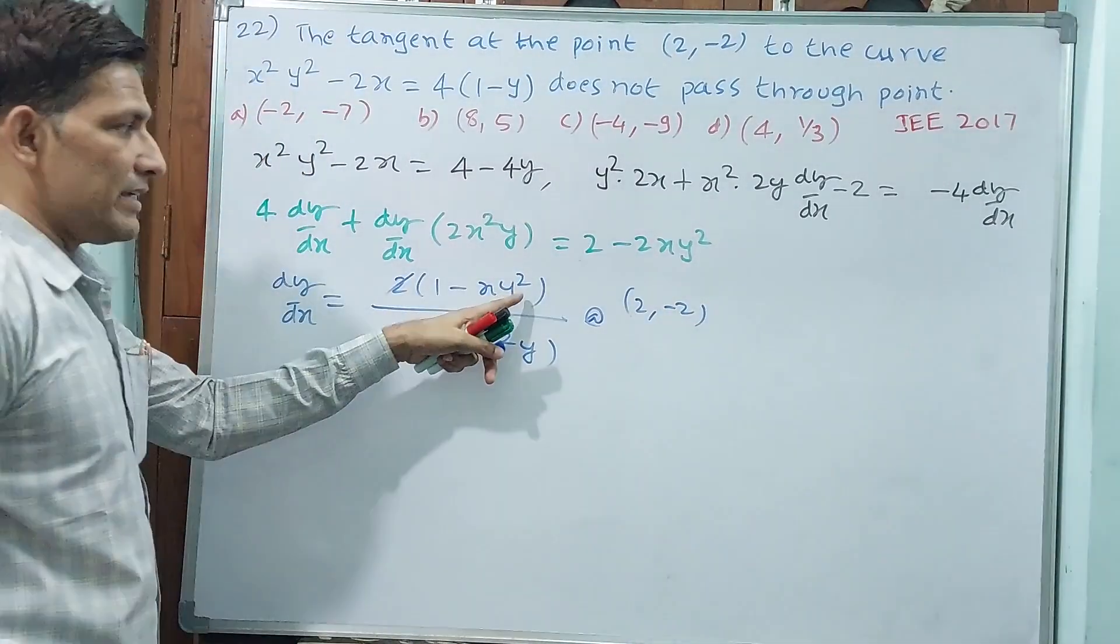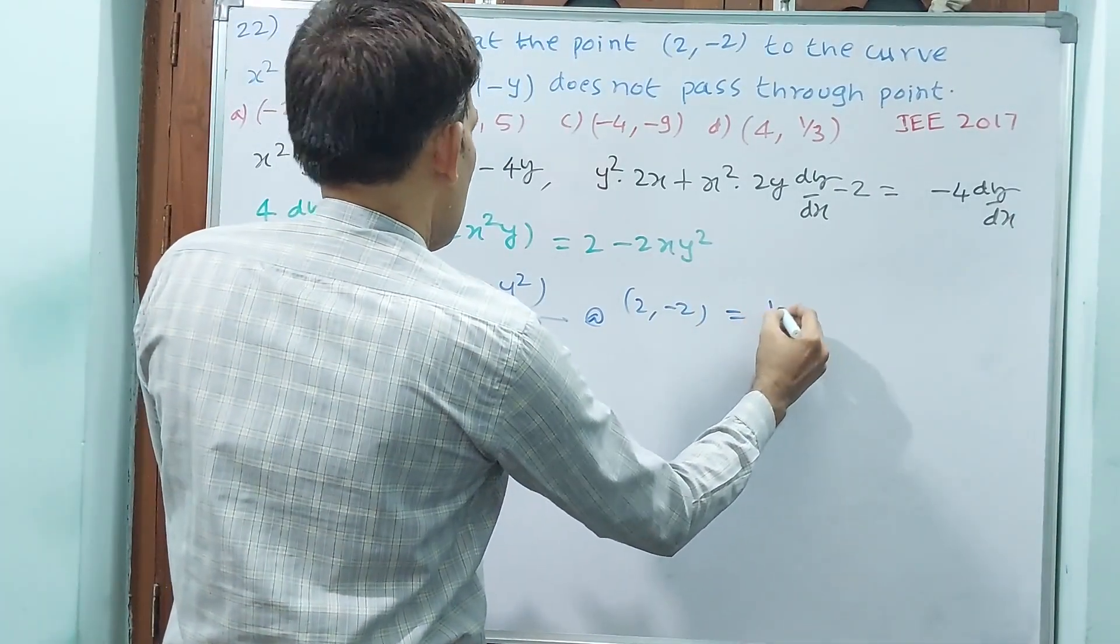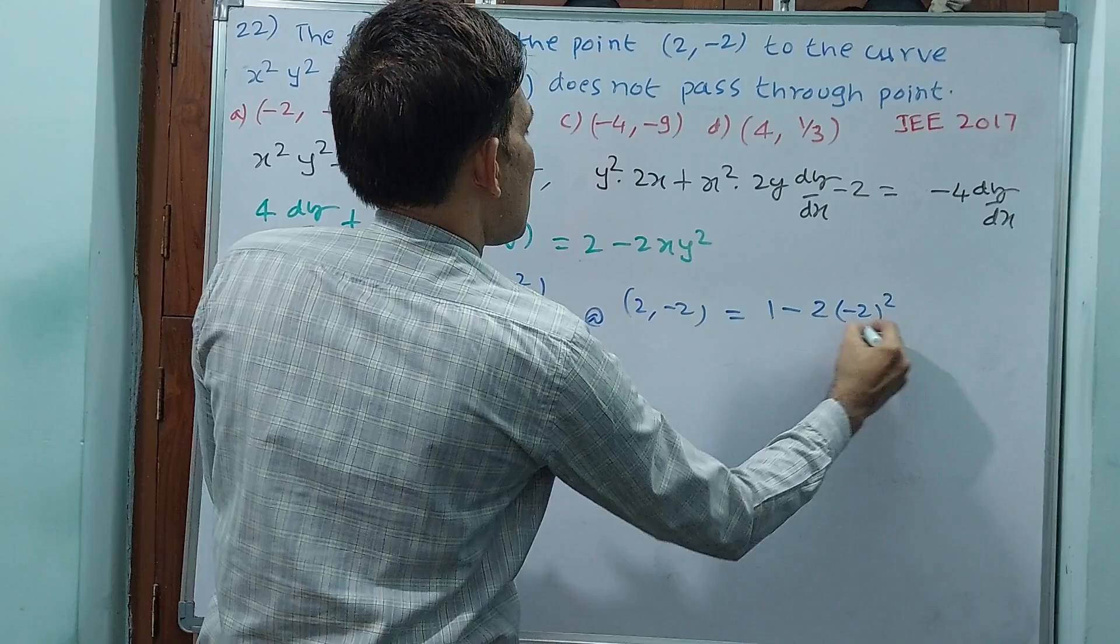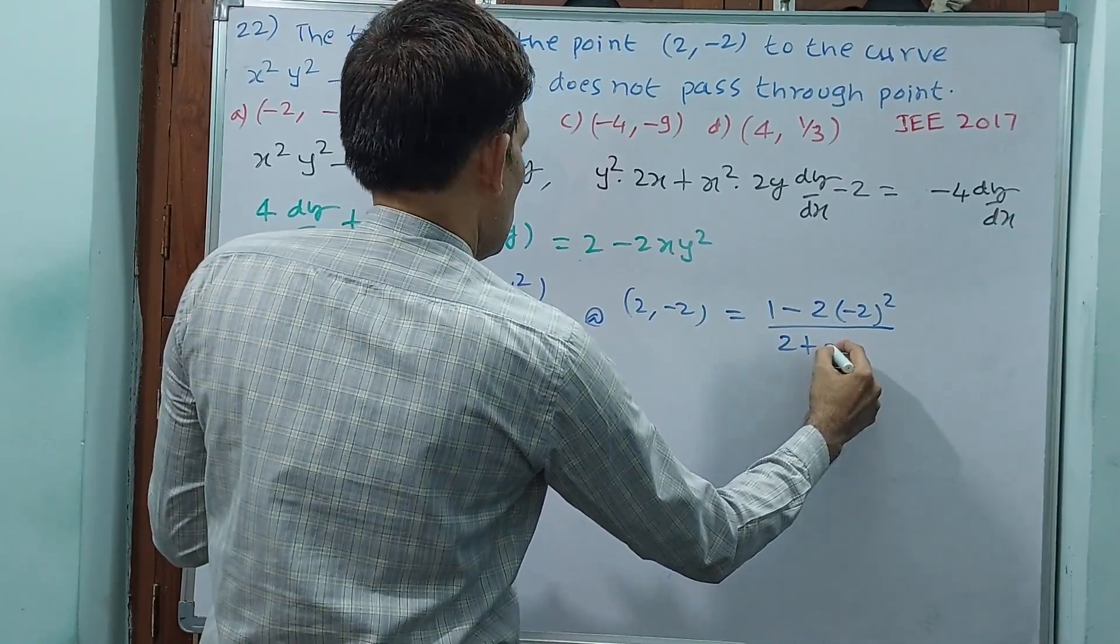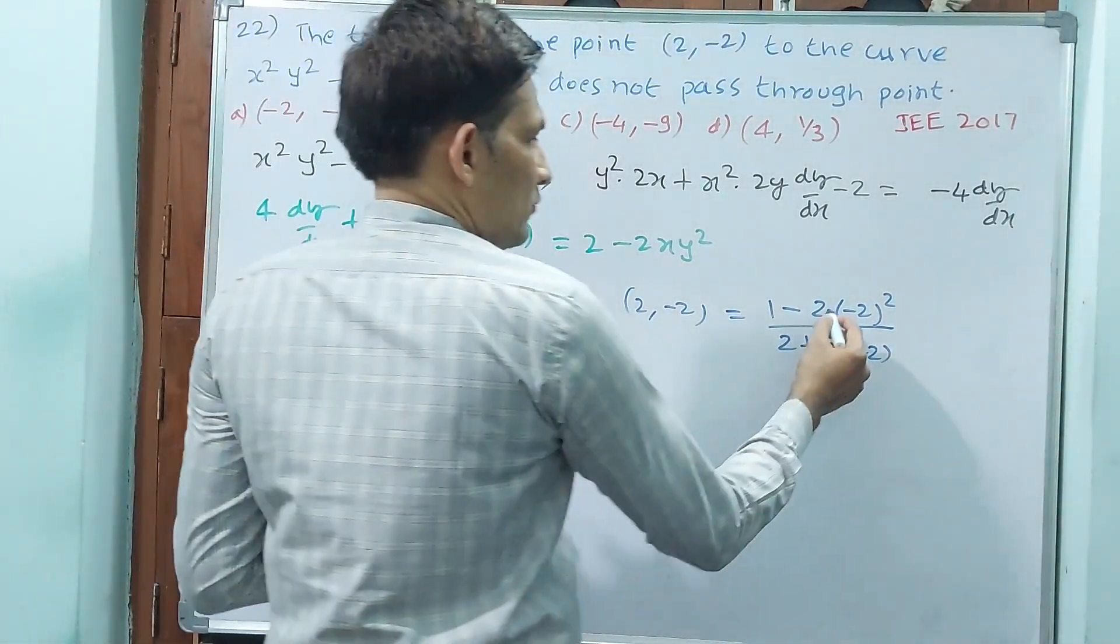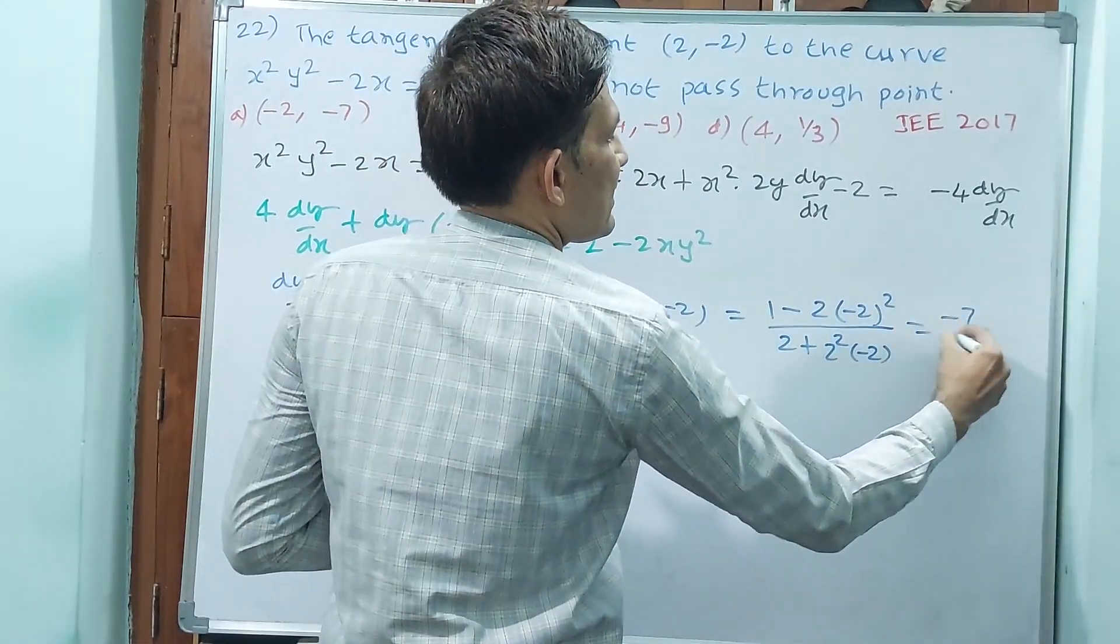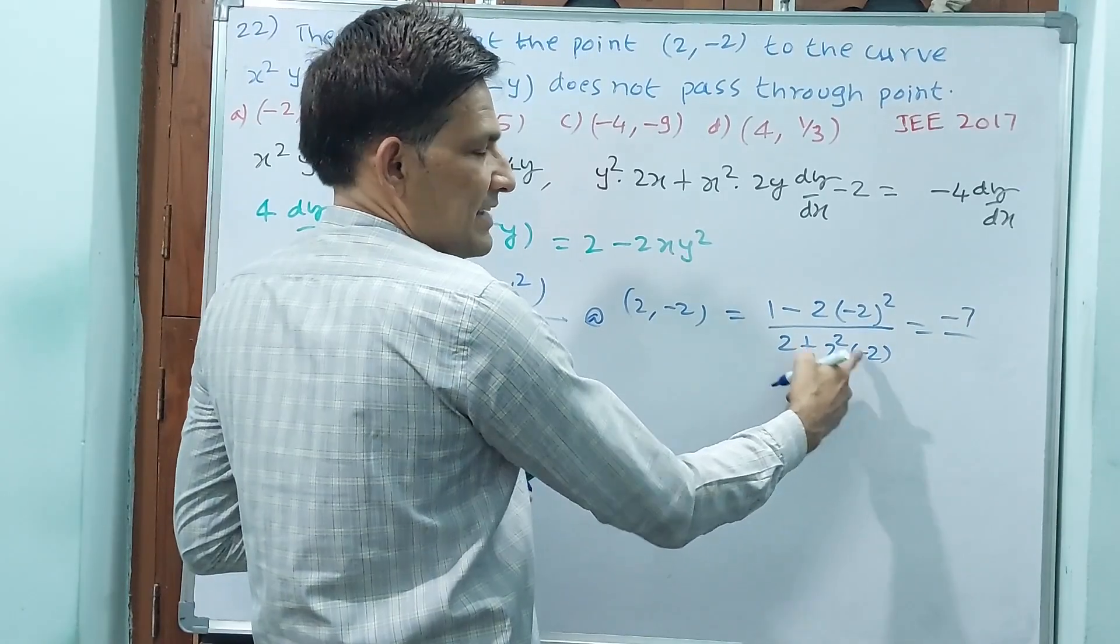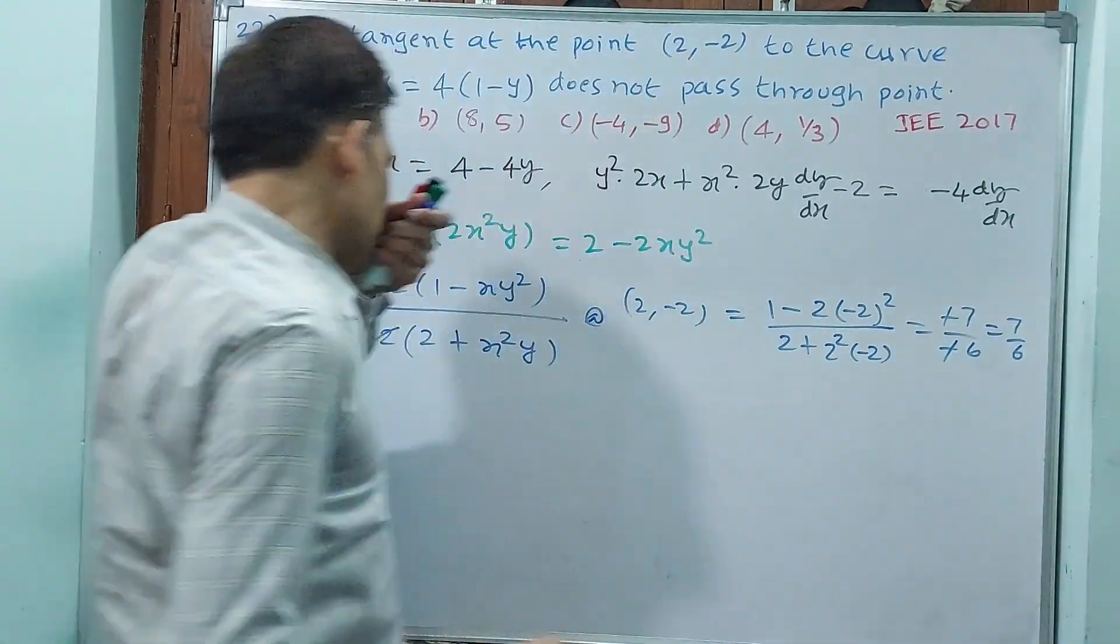Let me see, whenever x is there, 2, whenever y is there, -2. So 1 - 2·(-2)²/[2 + 2²·(-2)]. See, -2 squared, 4 times 2 is 8. 1 - 8 is -7. 4 times -2 is -8. 2 - 8 is -6. 7/6 will be your slope.